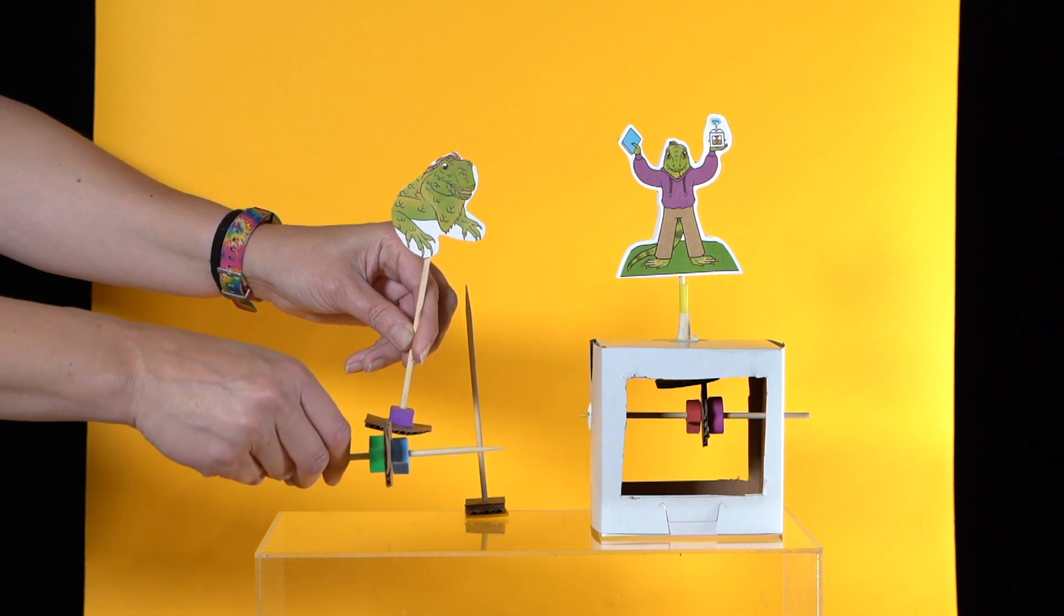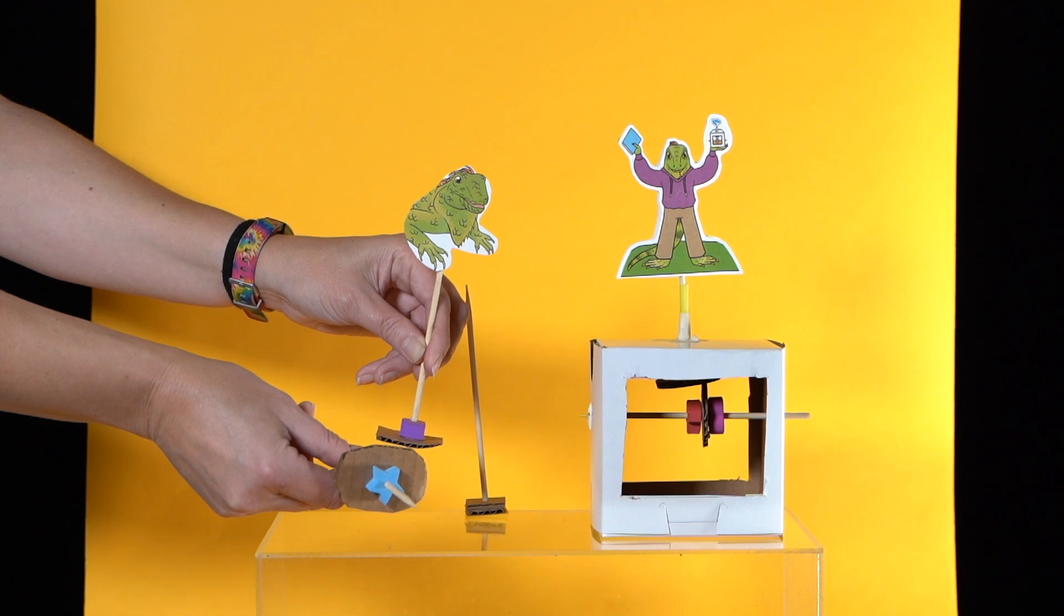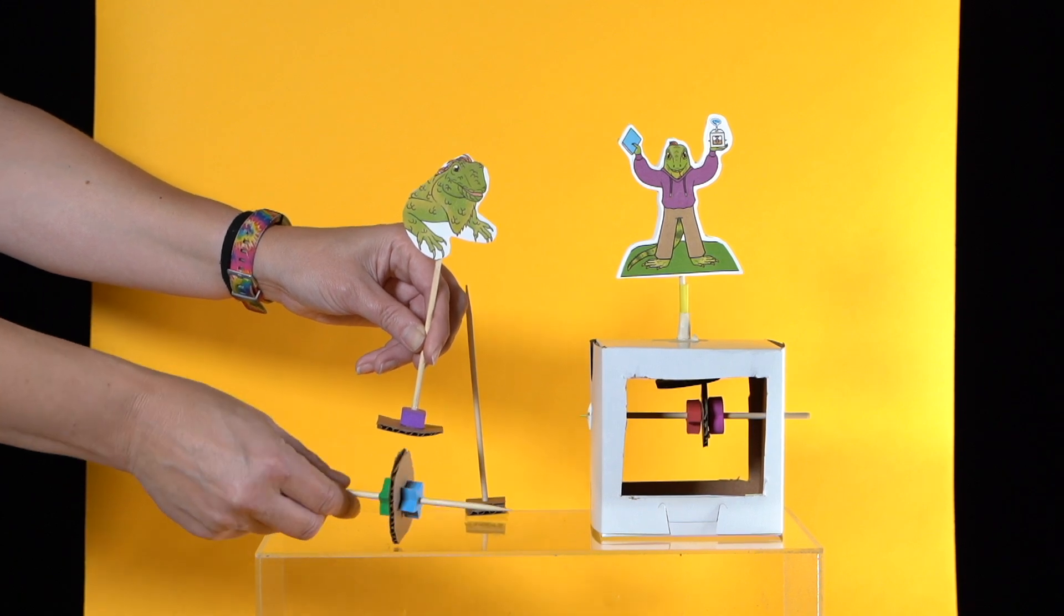The oval cam with the axle going through the center is another way to make the cam follower go up and down.